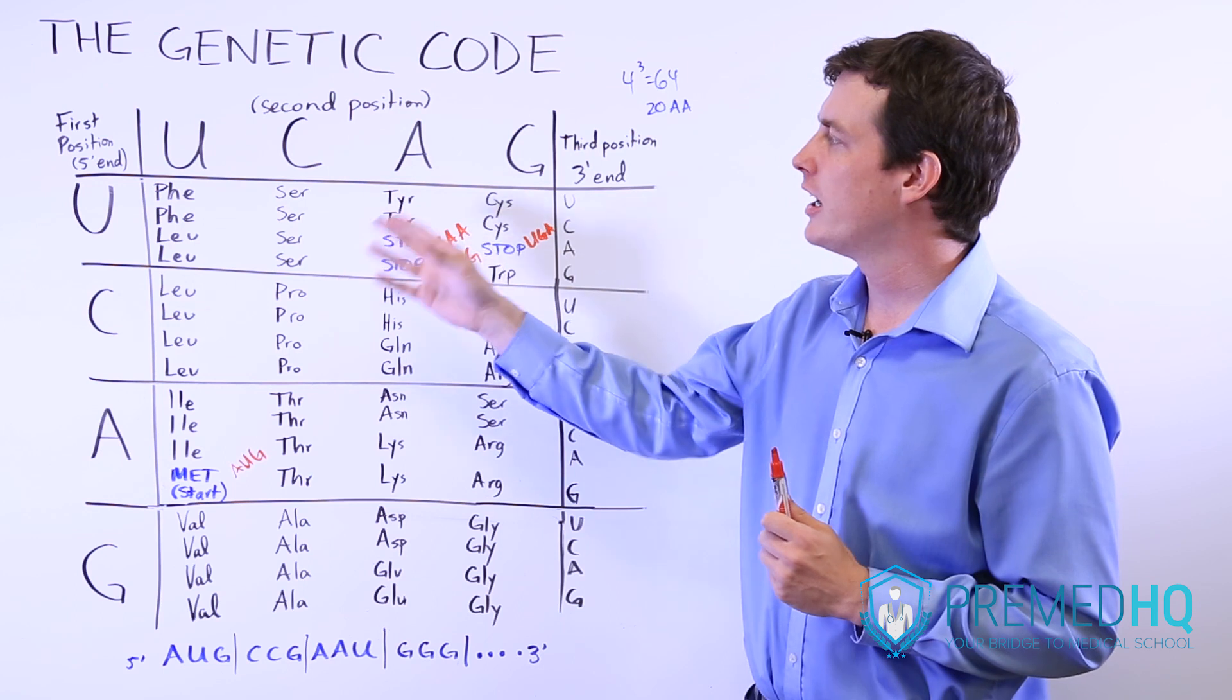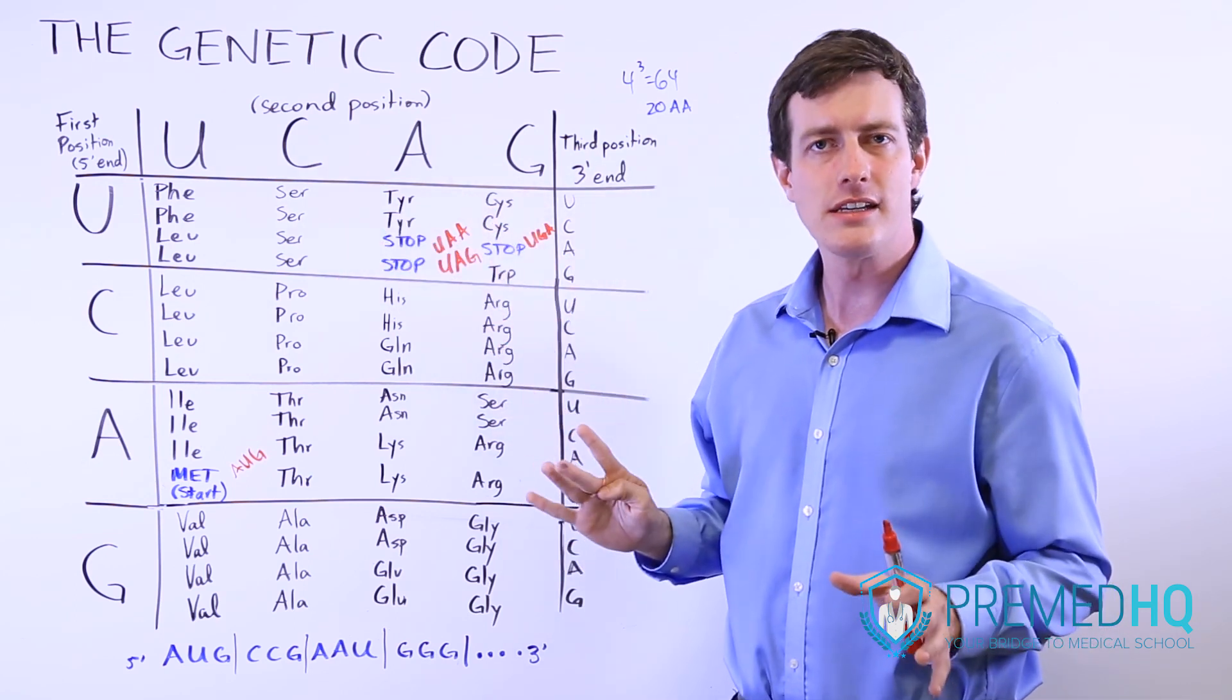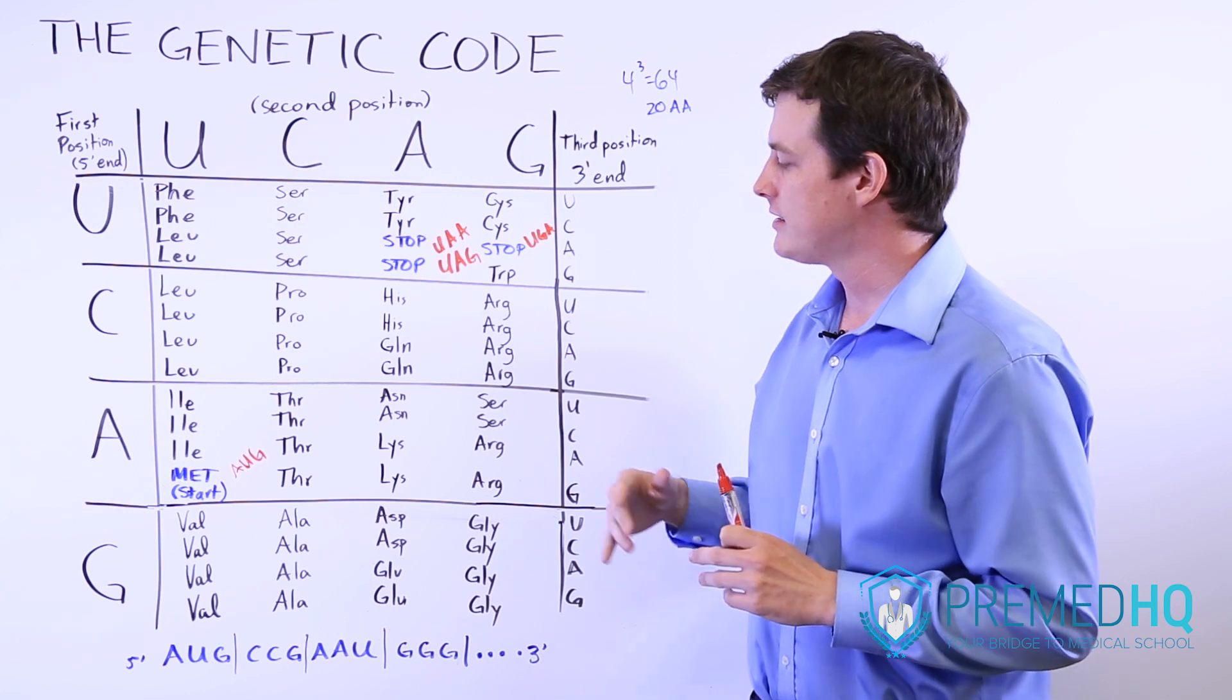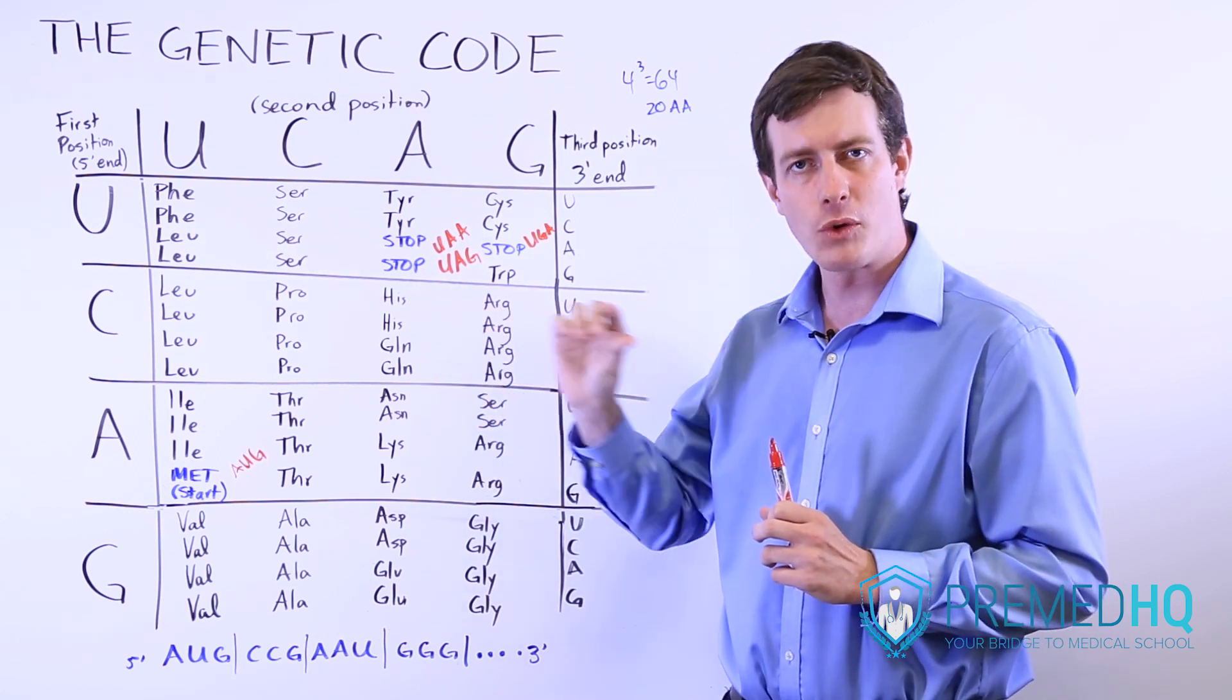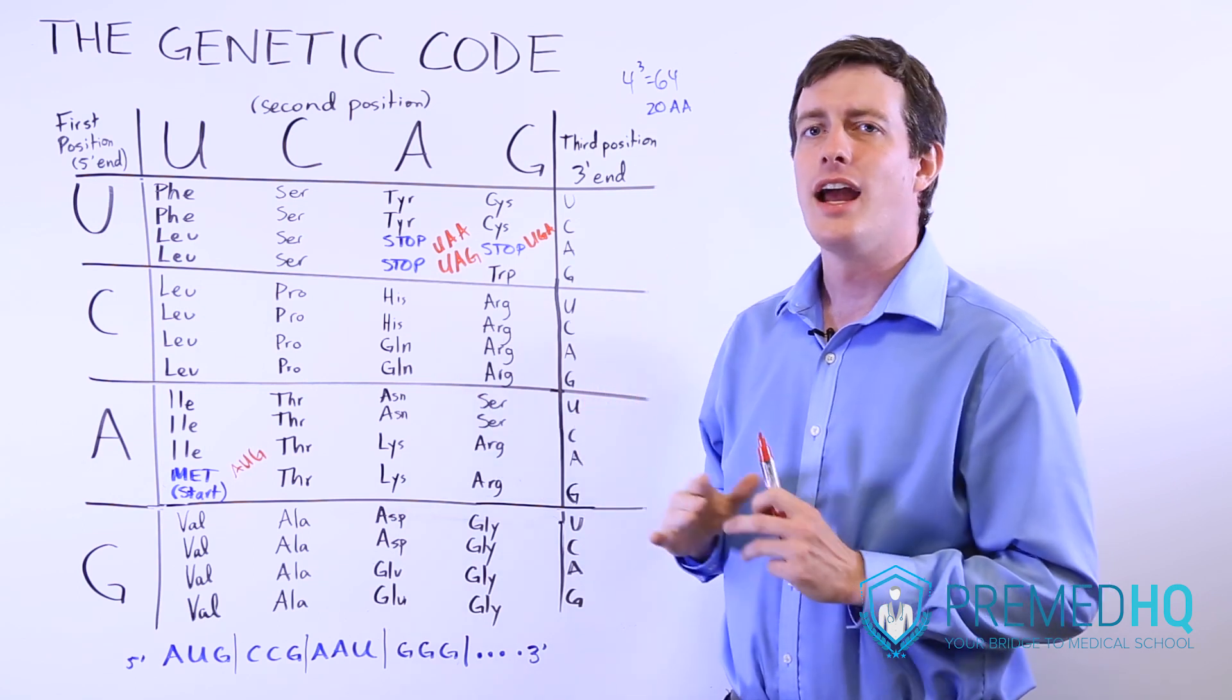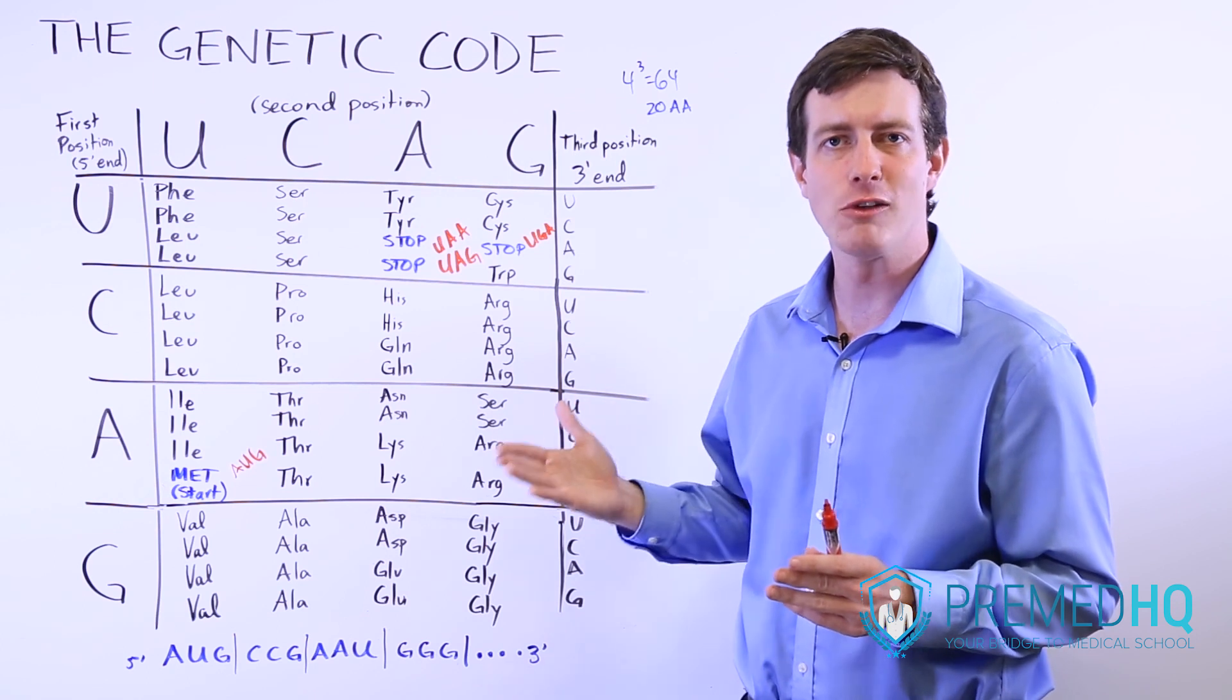If there's just an error in the transcription of RNA, that won't be nearly as significant because it is only going to affect that one transcript, so it would only affect the production of that one protein. And transcription happens frequently, and so there are a lot of chances to get it right.